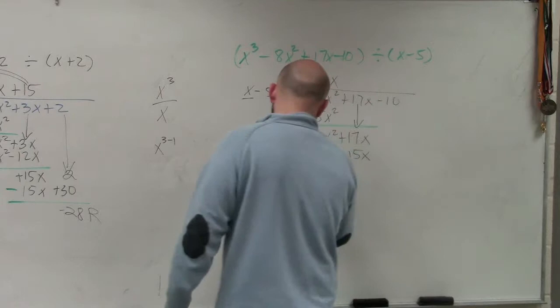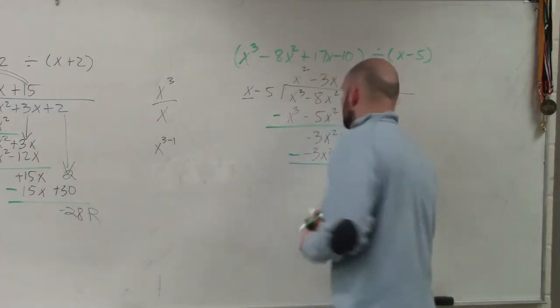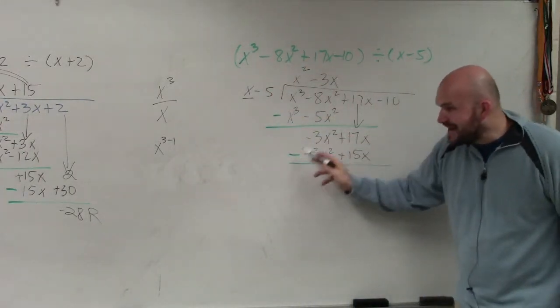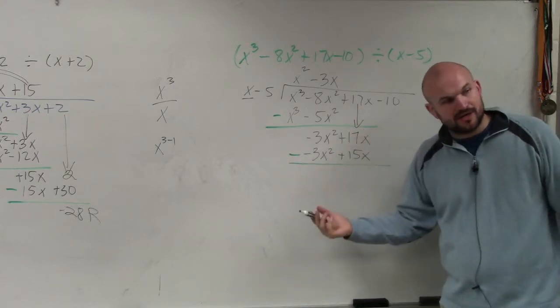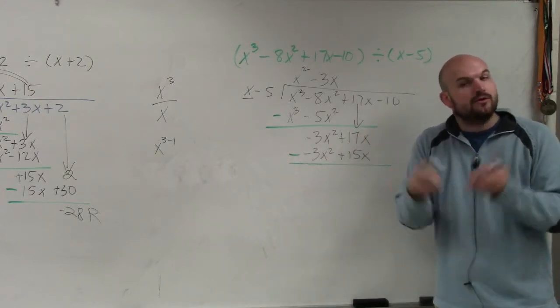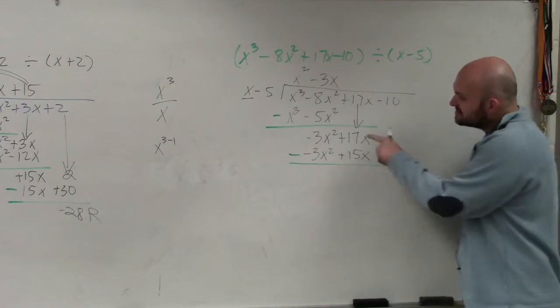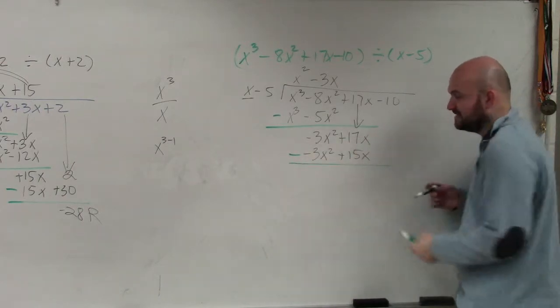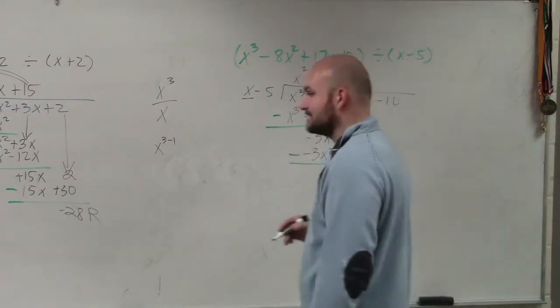Now I subtract my rows. So negative 3x squared minus a negative x squared goes to 0x squared, or just 0. 17x minus 15x goes to 2x.